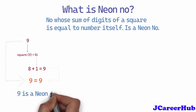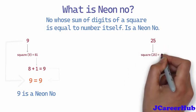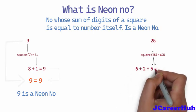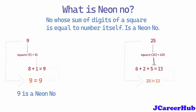We'll take another example. Number 25, its square is 625. If you calculate the sum, 6 plus 2 plus 5 is equal to 13. Number 25 is not equal to 13. So number 25 is not a neon number.